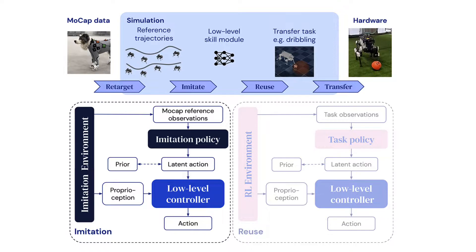The imitation controller consists of a high and low level, with a latent action space that is regularized towards a prior. The low level controller can then be reused to efficiently learn downstream tasks while preserving the style of the reference data.